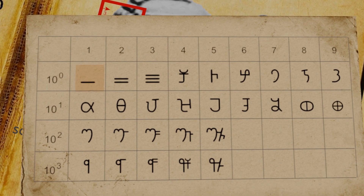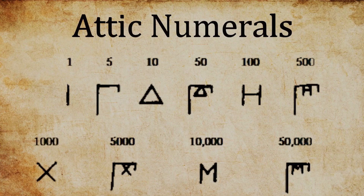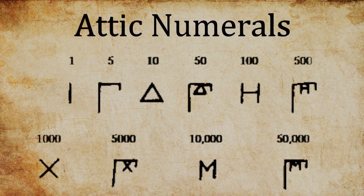The numbers were pronounced as: 1 as Prathama, 2 as Dvitiya, 3 as Tritiya, 4 as Chaturtha, 5 as Pancha, 6 as Shashta, 7 as Sapta, 8 as Ashta, and 9 as Nava. Similar pronunciations are still found in the Sanskrit language. They also had separate symbols for 10 numbers from 10 to 500, and 1000 to 5000.